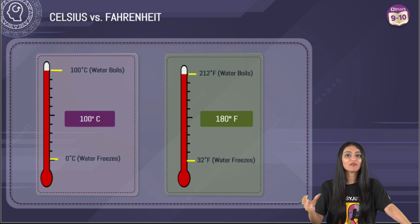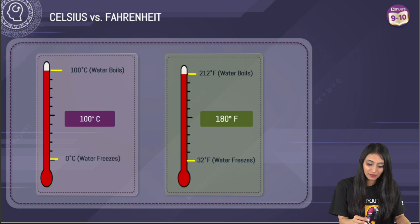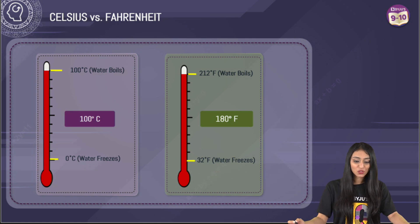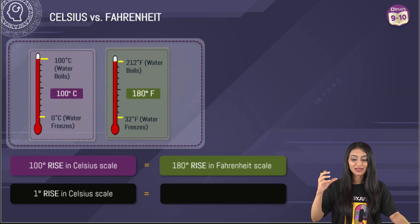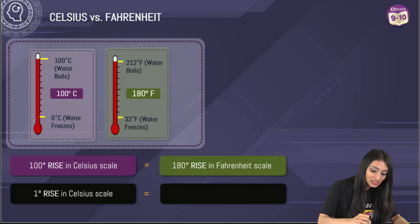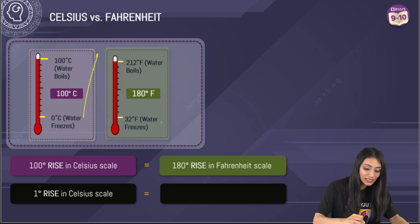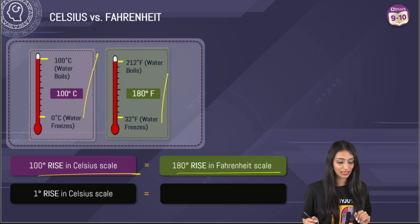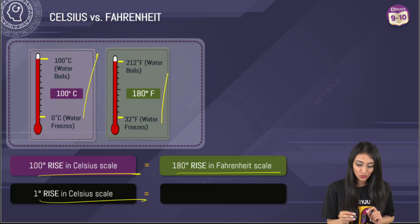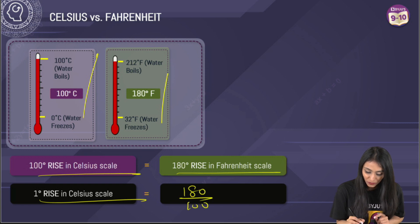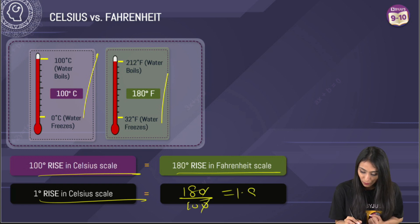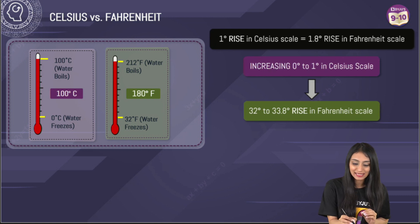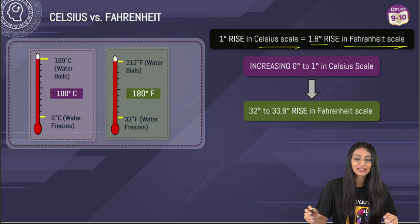These scales have a mismatch. At 0 degrees on the Celsius scale, the Fahrenheit scale is already at 32. Not only that — clearly, a 100-degree increase in the Celsius scale is equivalent to a 180-degree increase in the Fahrenheit scale. So 1 degree rise in Celsius equals 180 divided by 100, which is 18/10, which equals 1.8 degrees increase in the Fahrenheit scale. For every 1 degree rise in Celsius, there is a 1.8 degree rise in Fahrenheit.